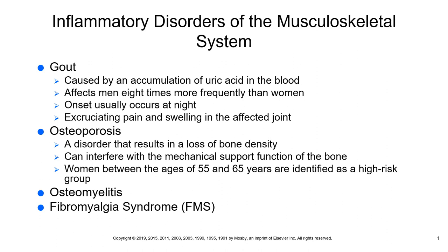During assessment, subjectively, patients want to complain of pain at night in the great toe or other joints. As a nurse, make sure you do a dietary history and ask about alcohol consumption — beer is high in purines. Ask about their diet regarding high-purine foods like organ meats such as brain, kidney, liver, heart, anchovies, yeast, herring, mackerel, and scallops.